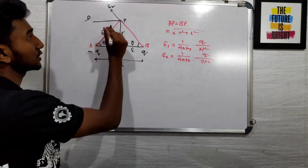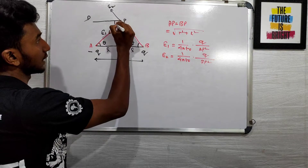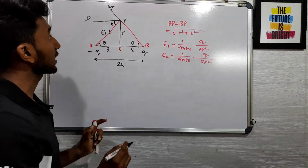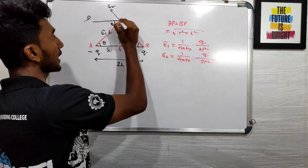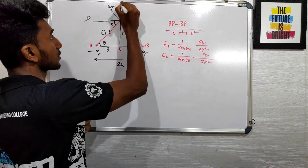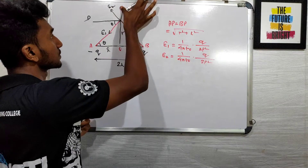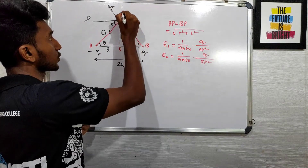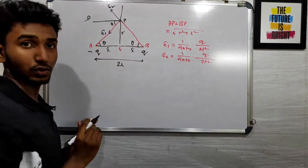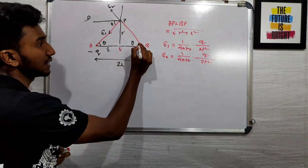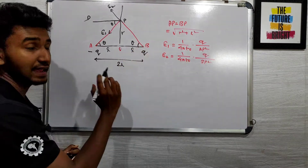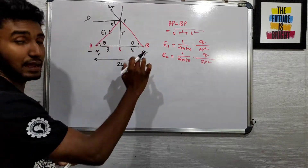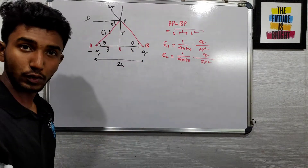This angle is equal to theta, so this is theta. So we have to draw one line. Angle T is angle theta, then PDAB is zero.